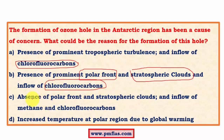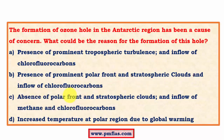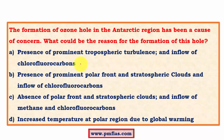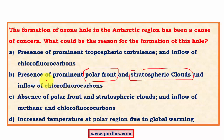Option (C) is absence of polar front — but the absence of a polar front cannot cause ozone destruction, because a strong polar front is what keeps the polar vortex in place and enables it to destroy large amounts of ozone. Option (D) is increased temperature at polar regions — this never happens and has nothing to do with ozone depletion, even under global warming. Therefore option B is the most fitting answer: a prominent polar front creates a strong polar vortex, which gives rise to polar stratospheric clouds, and these clouds together with CFCs lead to ozone depletion.